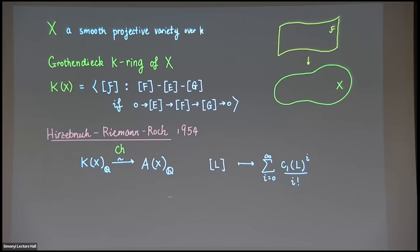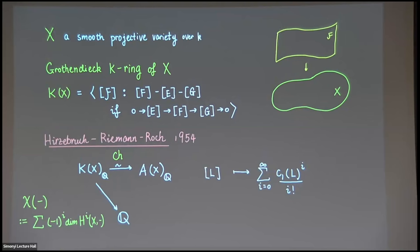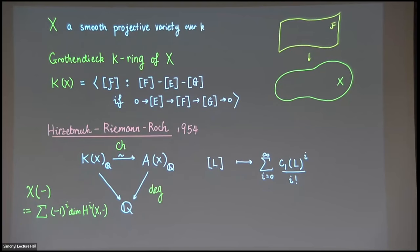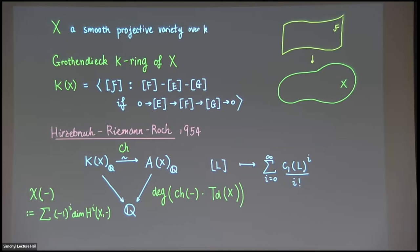The Chern character is defined by sending a line bundle to the exponentiation of the first Chern class of that line bundle. To state the full theorem, the K-ring has a map to ℚ by taking the alternating sum of dimensions of sheaf cohomology — the Euler characteristic. On the Chow ring side, you can take the degree, which is given by pushing forward to a point. The Hirzebruch-Riemann-Roch theorem says: when you want to compute the Euler characteristic of a vector bundle, you push it to the Chow ring using the Chern character, intersect with the Todd class, and take the degree.